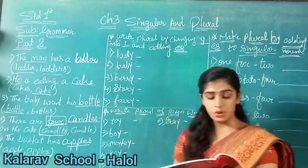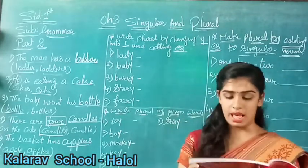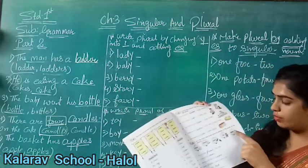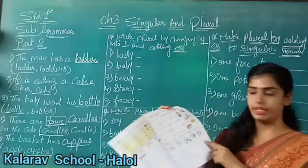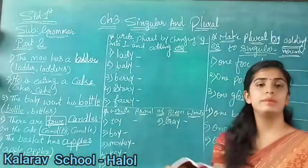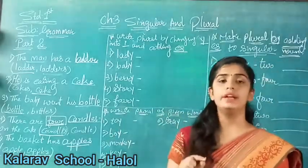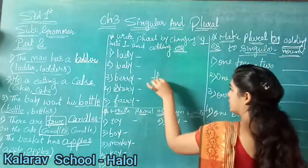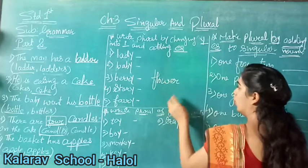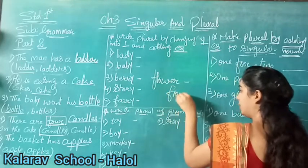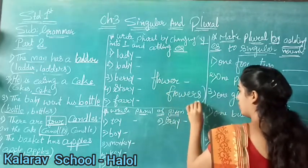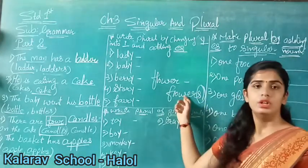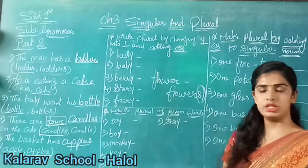Read first one: 'Anu is putting blank in the vase.' What will we put in the vase? Flowers. Here we have shown one, two, three, four flowers. So what will we write in the first blank? Flowers. Why? Because we have to add S at the end. Flower is the singular, and the plural will be F-L-O-W-E-R-S - we have to add S. Flowers means so many flowers; we are talking about more than one flower.